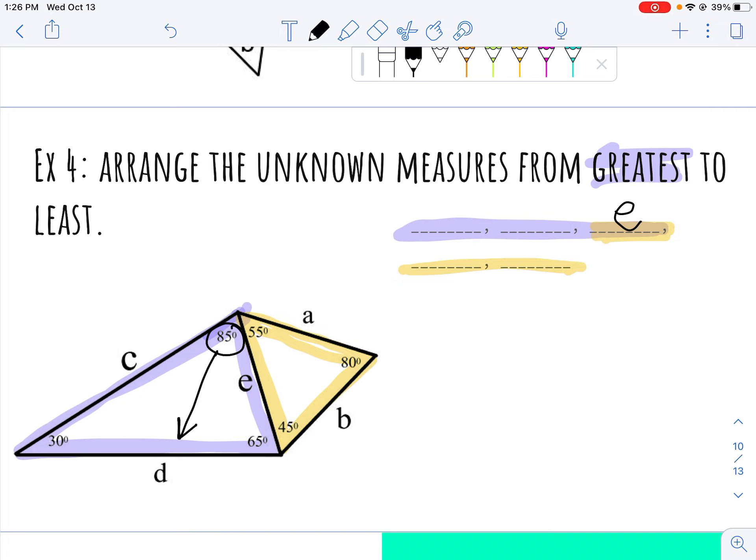Looking just at the purple triangle, 85 is across from D, 65 is across from C, and then my smallest angle within that triangle is 30 across from E.